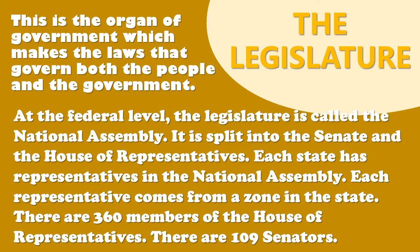Every representative comes from a zone in the states. The bigger the state, the more representatives it will have. Every state has at least one representative elected by the citizens of the state. There are 360 members of the House of Representatives. The head of the House of Representatives is the Speaker of the House. Members of the Senate are called senators. There are 109 senators.